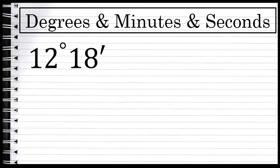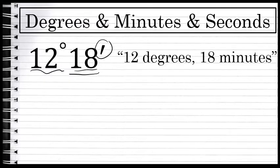Sometimes you'll see the degree measure of an angle written like this: 12 degrees and then there's an 18 with what looks like a slash or an apostrophe beside it. In some contexts this symbol means feet if you're measuring the length of something, but here that slash actually stands for minutes. This would be read aloud 12 degrees 18 minutes.